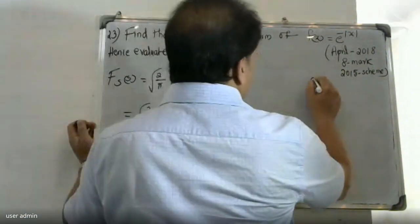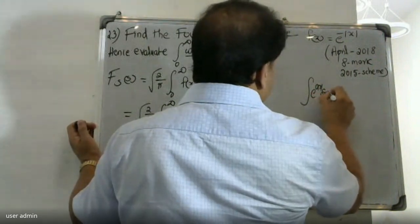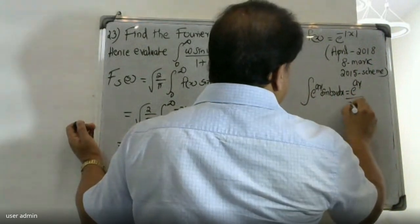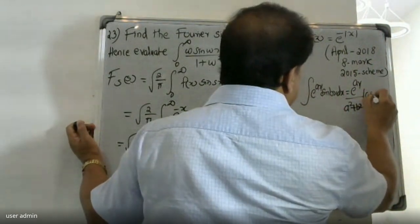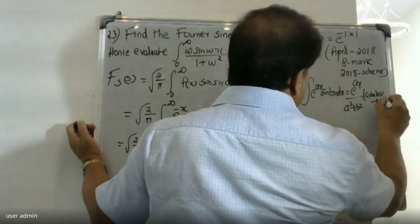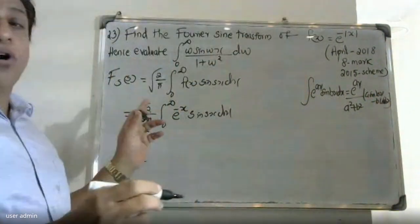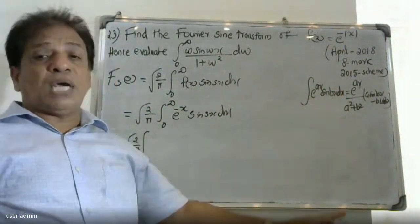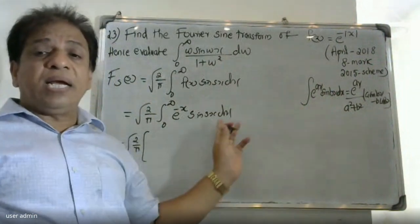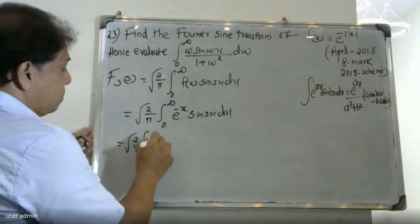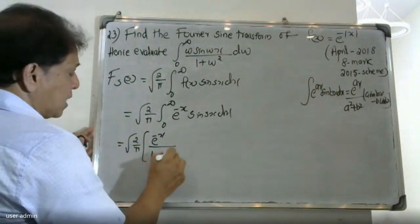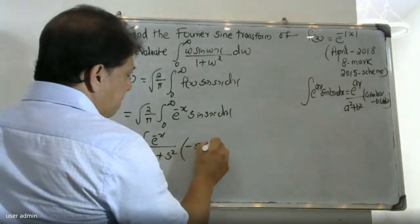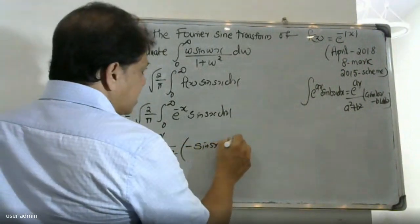We apply the standard formula: integral of e raised to ax times sine(bx) dx equals e raised to ax divided by (a squared plus b squared), times (a sine(bx) minus b cos(bx)). Here, a = minus 1 and b = s, giving e raised to minus x divided by (1 plus s squared), times (minus sin(sx) minus s cos(sx)), evaluated from 0 to infinity.